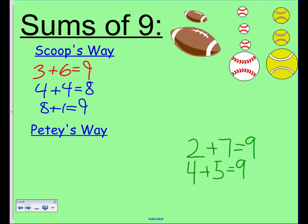Petey, do you see any other ways? Yeah, Petey sees 9 balls all together. He doesn't see any rocks. So 9 plus 0, once again, equals 9.